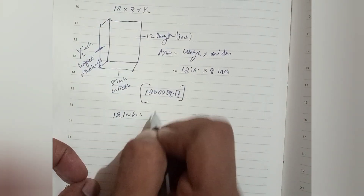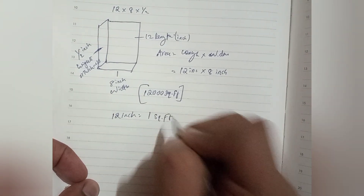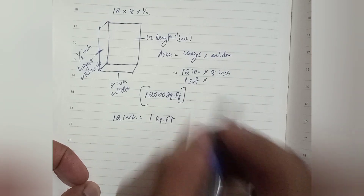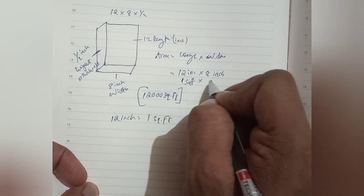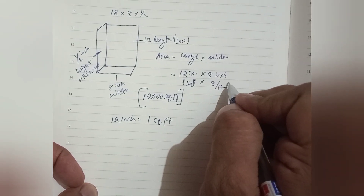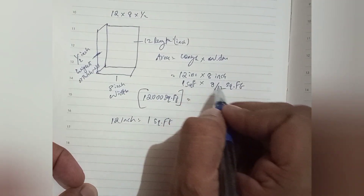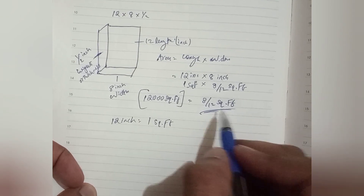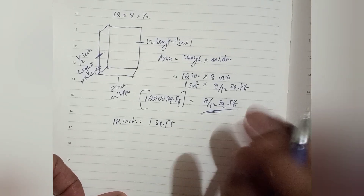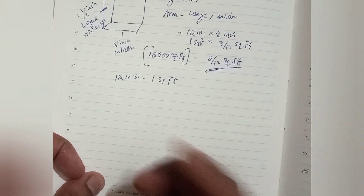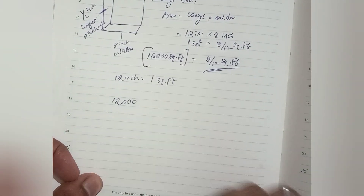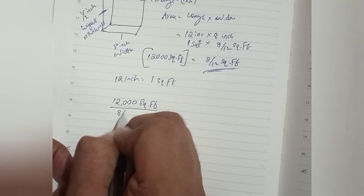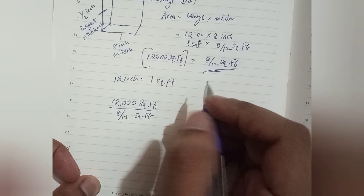We have to convert into square feet. 1 square foot equals 12 inches. So 8 inches equals 8/12 square feet, which is 1/12 multiplied. So the tile area is 8 by 12 square feet, giving us 1 by 12. We can calculate this: square feet equals 12.5.